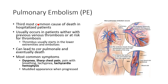Our right heart is afterload sensitive. Anything that raises pressure on the right side is not a good situation, because our right ventricle absolutely does not have the ability to accommodate for any increases in pressure. It's also going to affect the pulmonary circulation. Overall, it's making it harder for the lungs to do their job — to exchange gases and oxygenate our bodies. It starts typically somewhere else and travels elsewhere.